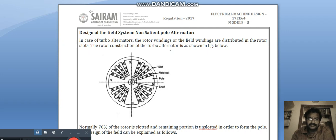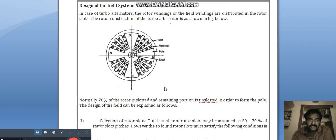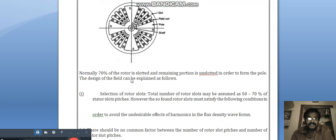The rotor construction of the turbo alternator is shown in the figure. These are the slots and field coils. This will be positive charge and this will be negative charge. This shaft, normally 70% of the rotor is slotted and remaining portion is unslotted in order to form the pole.